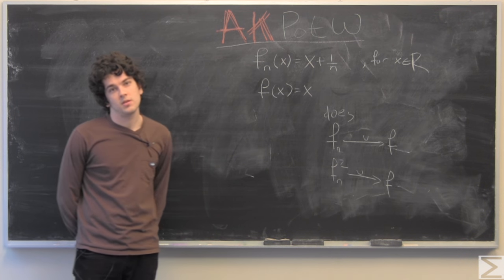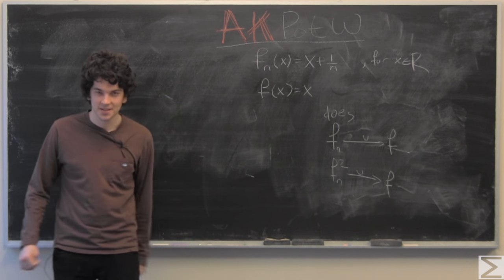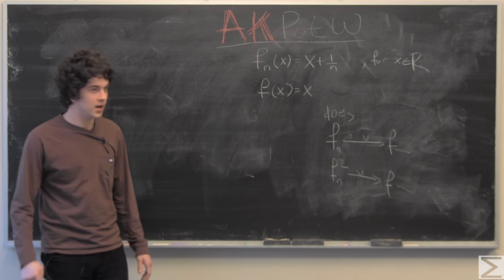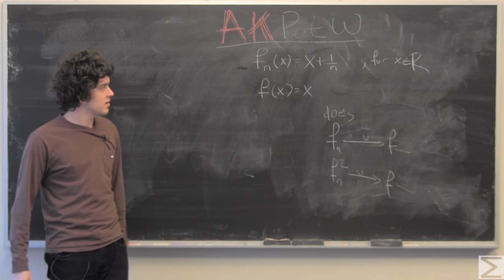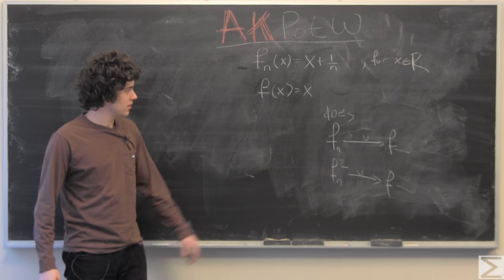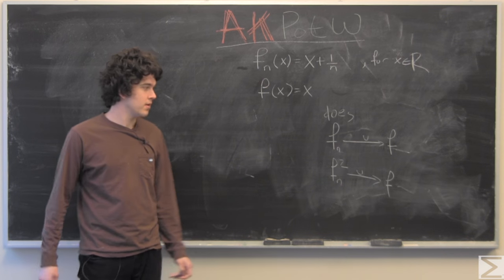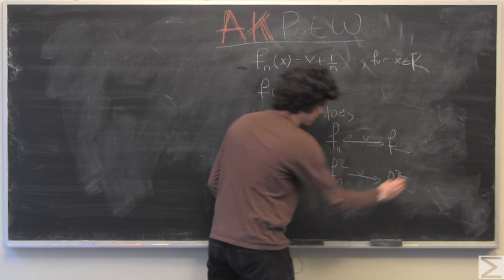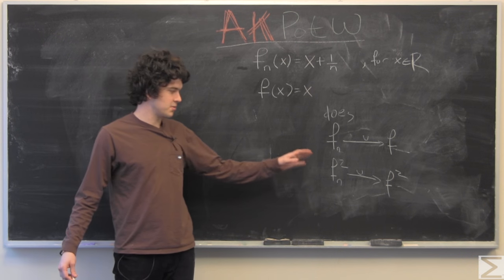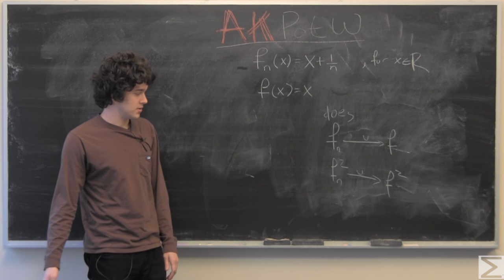Hello and welcome to the Center of Math Advanced Knowledge Problem of the Week. This week we're given a sequence of functions which is fn of x and we want to see if it converges uniformly to f and after that we want to inspect fn squared and if that uniformly converges to f squared.